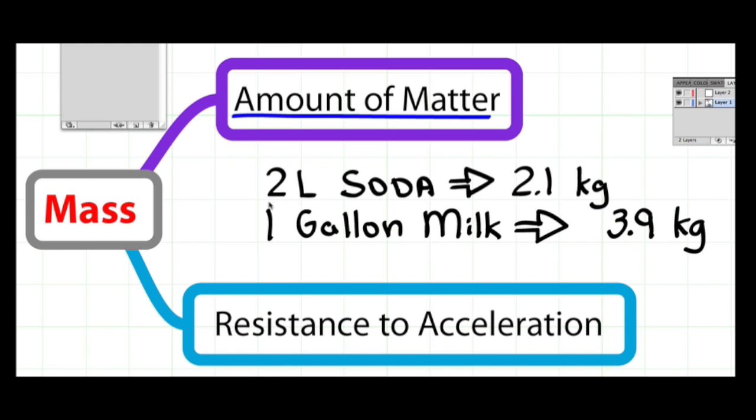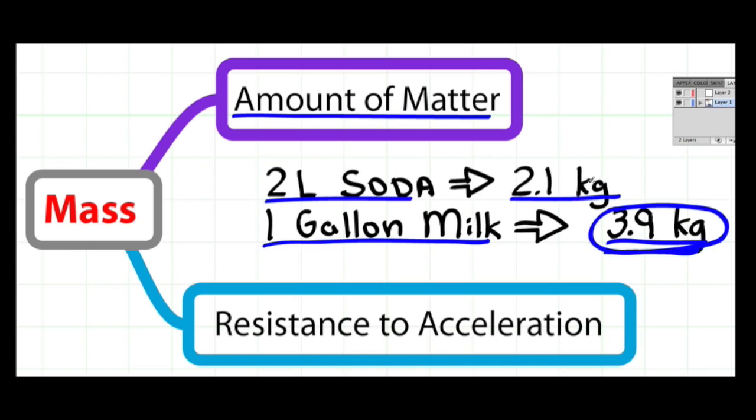For example, the 2-liter soda has a mass of about 2.1 kilograms. If we look at the mass of one gallon of milk, this will have a mass of about 3.9 kilograms. And so we can say the amount of matter in the milk is greater than the amount of matter in the soda.